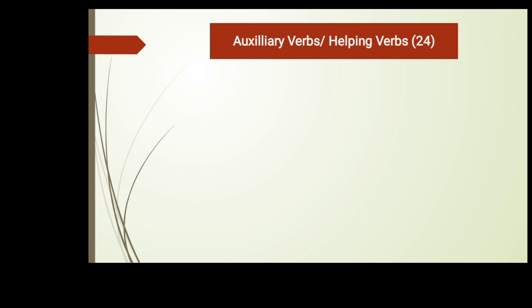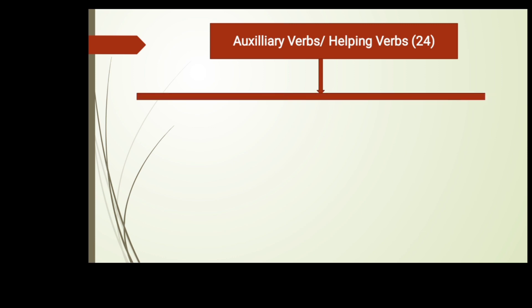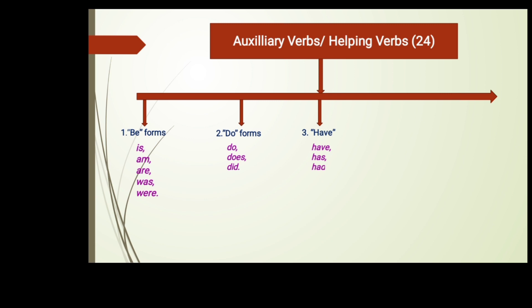Let me give you a bit of depth on auxiliary verbs in English grammar. Auxiliary verbs, also known as helping verbs, are 24 in number. These 24 auxiliary verbs can be classified into five categories. The first category is 'be' forms: is, am, are, was, were. The second classification is 'do' forms: do, does, did. The third classification is 'have' forms: have, has, had.